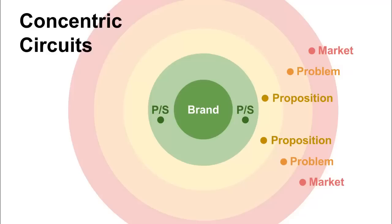Each circuit needs to have products and services that match the brand, a proposition that explains how the product or service solves the problem, a problem that's going to motivate people, and a clearly known market. If you haven't got all those elements conscious and aligned, you've got work to do. If you go to market with an incomplete circuit, you'll be pushing uphill, facing challenges, and may find yourself tempted into manipulations like excessive discounts or exaggerating the truth.